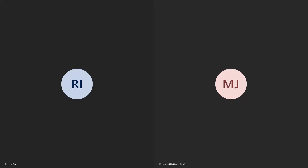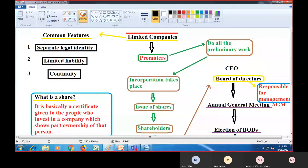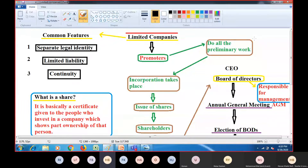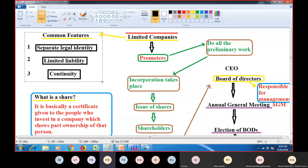Alright students, so in the last class we talked about limited companies. I'll give you a quick recap and then we'll proceed. Limited companies are types of business which have certain common features different from other types of business, such as sole trader business and partnership business. Those common features are separate legal identity, limited liability, and continuity.